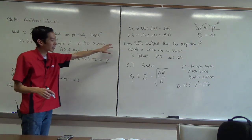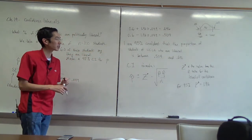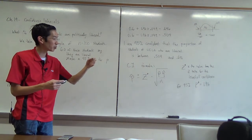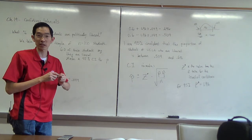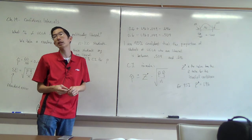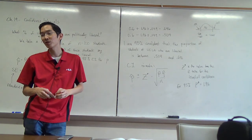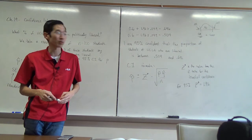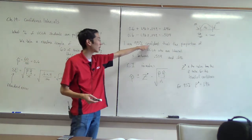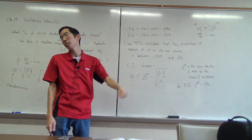Notice I'm writing 'I am 95% confident' that the proportion of students at UCLA who are liberal is between 0.504 and 0.696. I do not write 'there's a 95% probability' that the proportion is between those values. Notice I'm writing 'confident,' not saying there's a 95% chance or 95% probability. Why not?